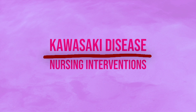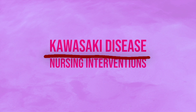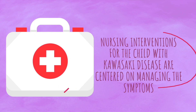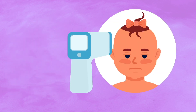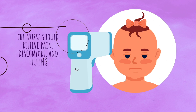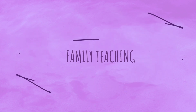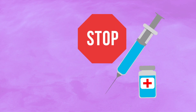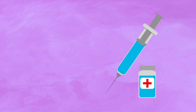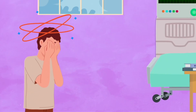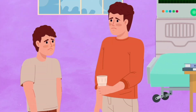Now let's talk about what you would do as the nurse to care for the pediatric patient with Kawasaki disease. Nursing care is really centered on managing the symptoms. Closely monitor the child's temperature, cardiac status, intake and output, and daily weight. If the child is prescribed immunoglobulin therapy, teach the family that the child should not be given any live vaccines, such as measles, mumps, and rubella, for three to six months after immunoglobulin therapy has ended. This is because immunoglobulin therapy stops the body from producing antibodies.